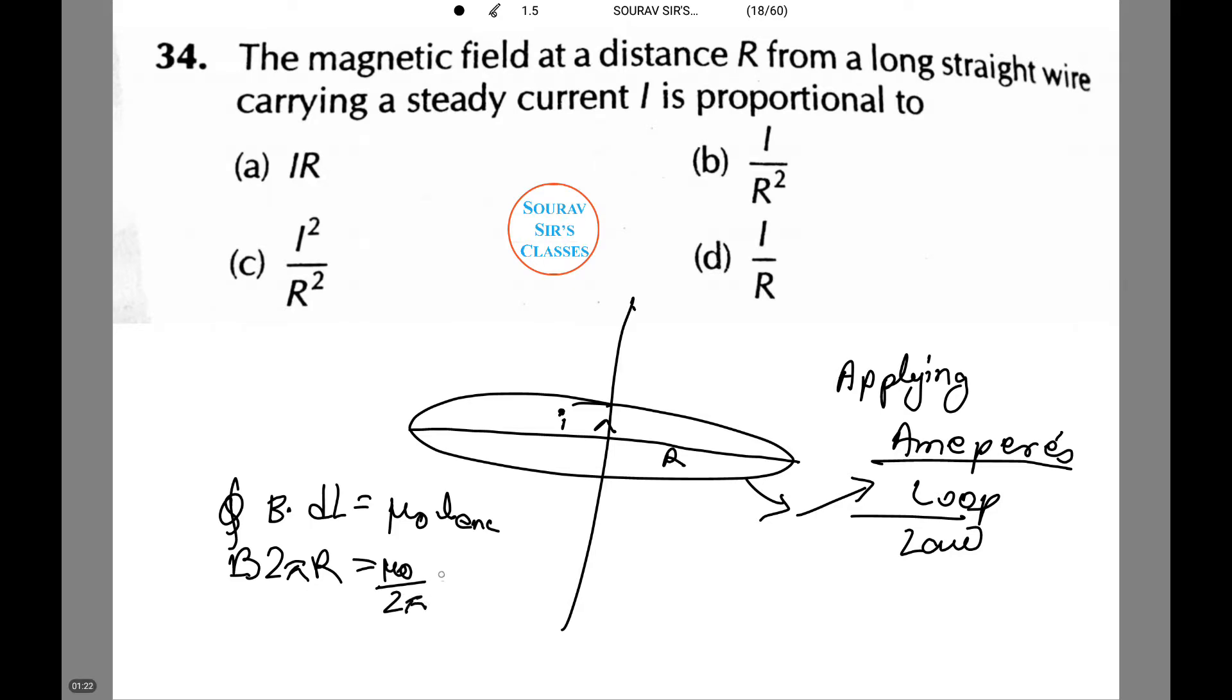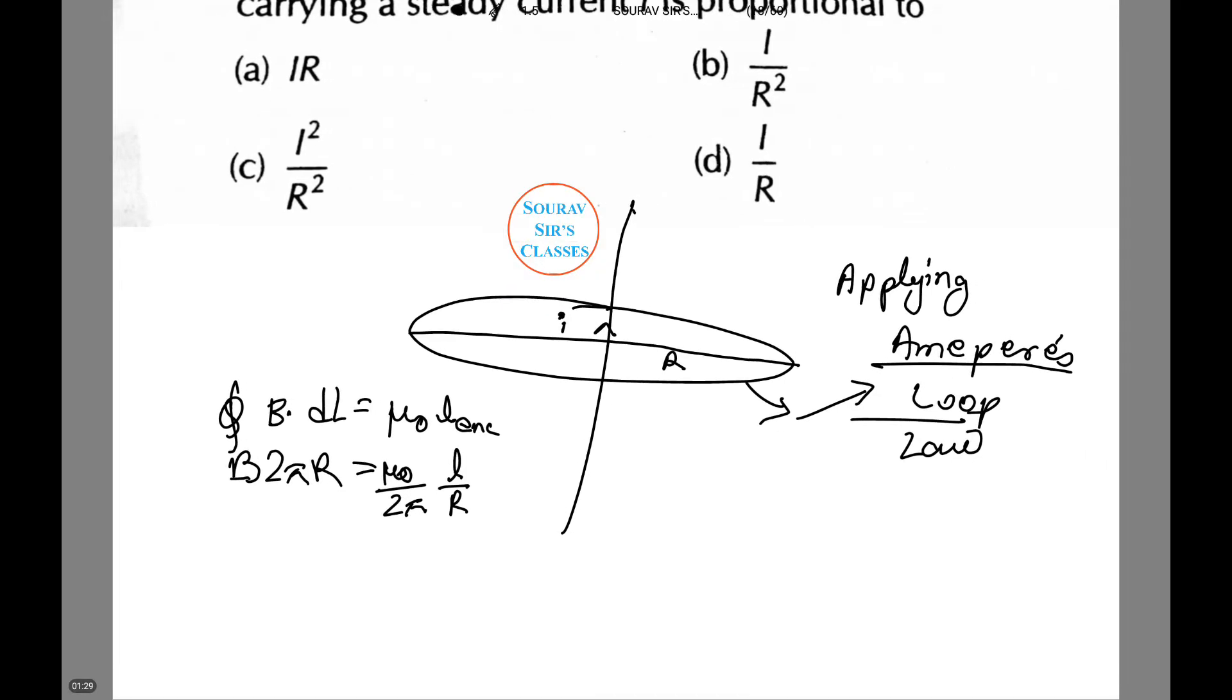by 2π into I by R. Therefore, B is directly proportional to I by R, and Option D is the correct answer from this question. Moving on to the next question.